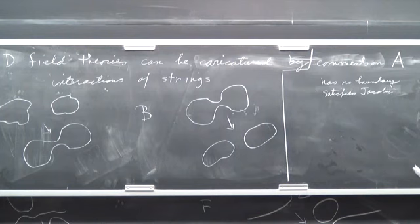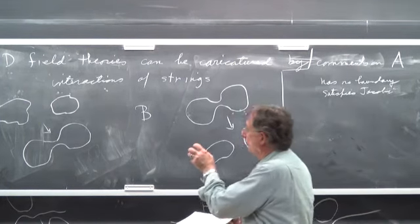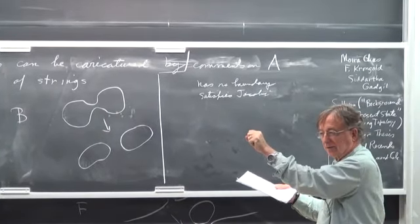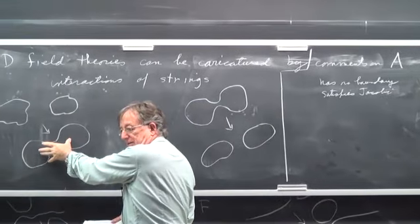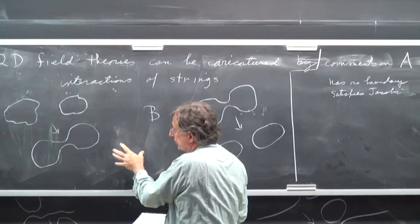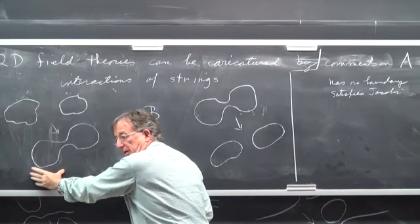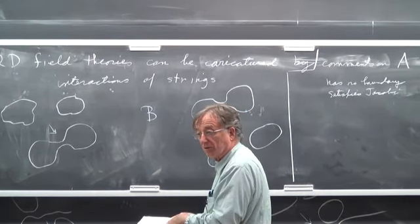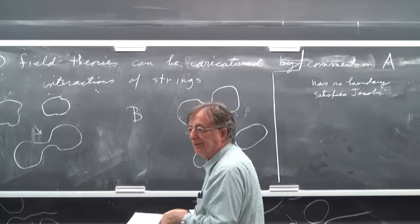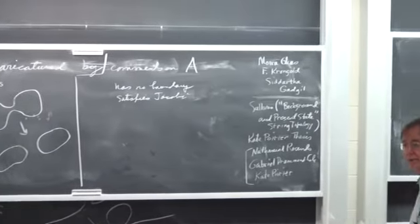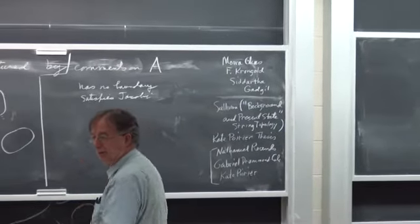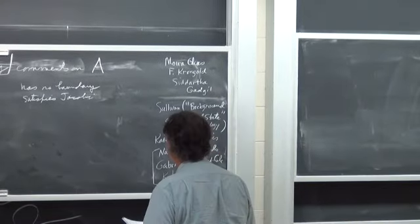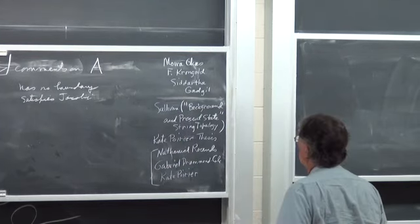You might think: how could it satisfy Jacobi? Jacobi is like a three-term sum equals zero — this is a geometric thing. When you have to interact three strings to describe Jacobi, one and two interact and combine, then you take a third string and let it interact. The third string could interact with either part, so one term in Jacobi breaks into two terms. Cyclically permuting gives six terms, and they cancel in pairs.